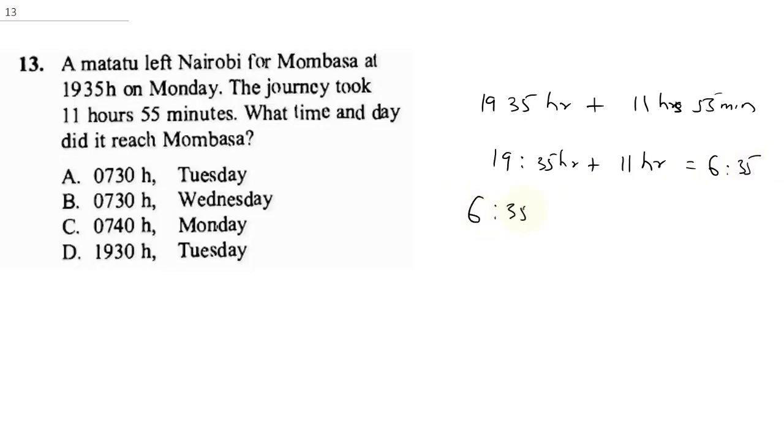Then when you add 635 plus 55 minutes, this will now give you 7h 30 minutes. And this will be on Tuesday. So the correct answer here, it's going to be A.